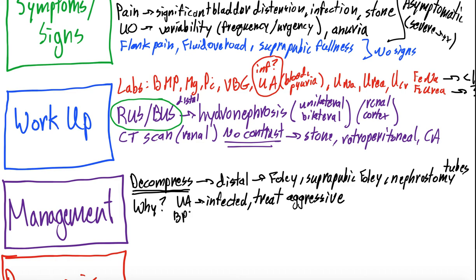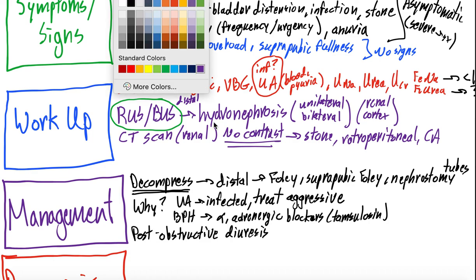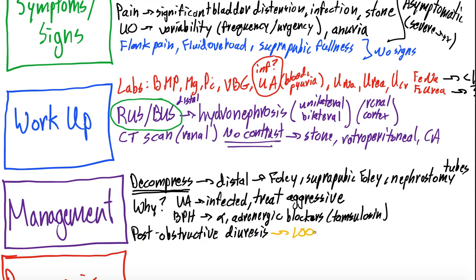If you think the obstruction is from BPH, alpha-1 adrenergic blockers such as tamsulosin can be helpful. These relax smooth muscle in the bladder neck and prostate, allowing urine to pass through better and helping relieve the obstruction. Beyond that, you need to decompress, figure out why they were obstructed, and address that causal etiology. Once you do, the big thing to monitor is for post-obstructive diuresis — we'll put out a dedicated video on that soon.